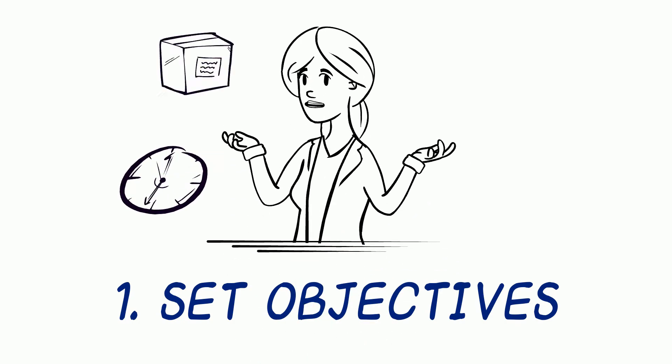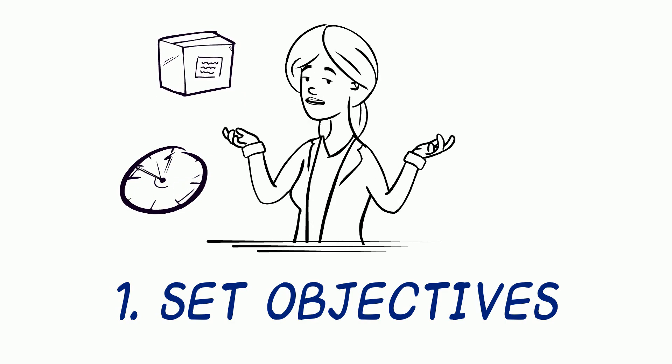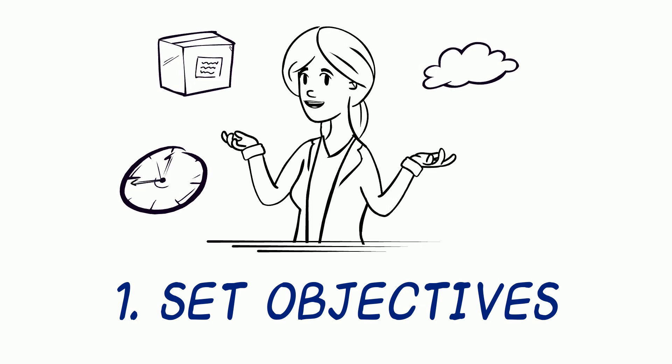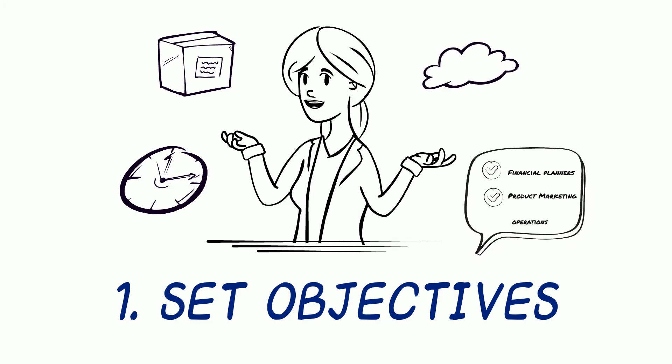Number one: set objectives. Demand forecasting should have a clear purpose, so it's important to set objectives. Choose your time period, the specific product or general category you're looking at, and whether you're forecasting demand for everyone or a specific subset of people. You'll also want to make sure it satisfies your financial planners, product marketing, logistics, and operations teams in a non-biased way. You'll need to understand what your goals are for the right demand capacity planning, which will allow you to use decision-making forecasting processes to understand consumer behavior better.